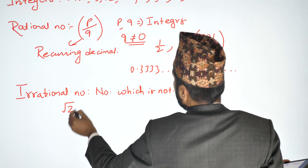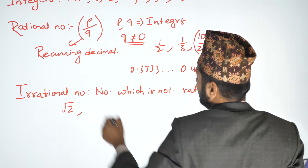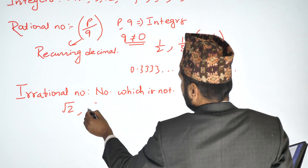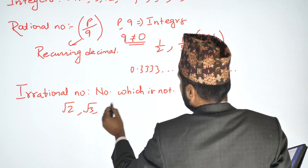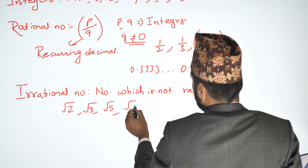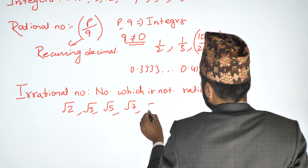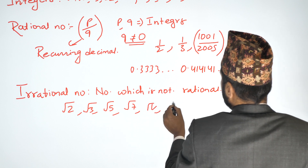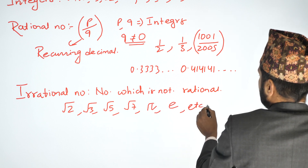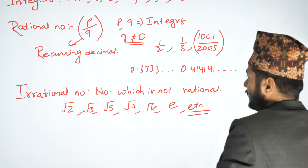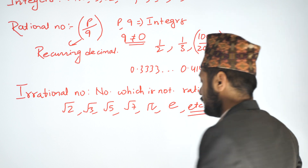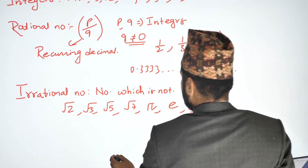Irrational numbers include values like root under 2, root under 3, root under 5, root under 7, pi (π), and e. These are irrational numbers.